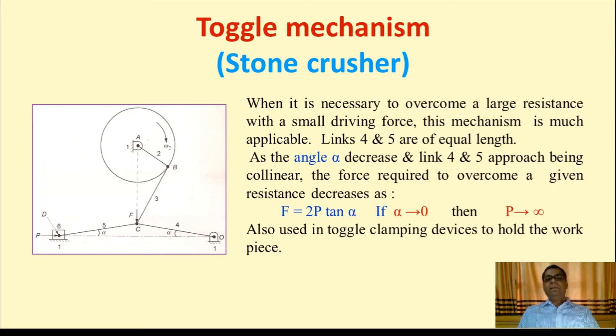As the angle α decreases and links 4 and 5 approach being collinear, the force required to overcome a given resistance decreases as F = 2P tan α. If α tends to 0, then P tends to infinity. Also used in toggle clamping devices to hold the workpiece.